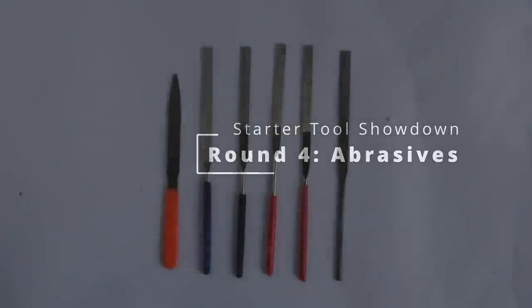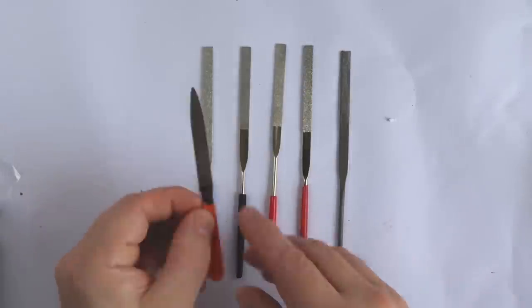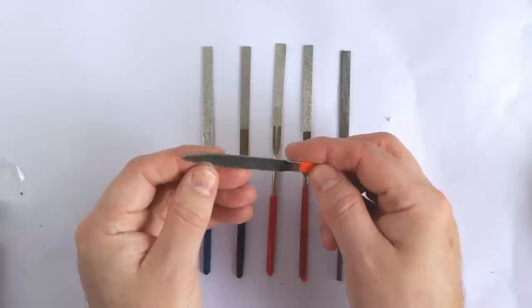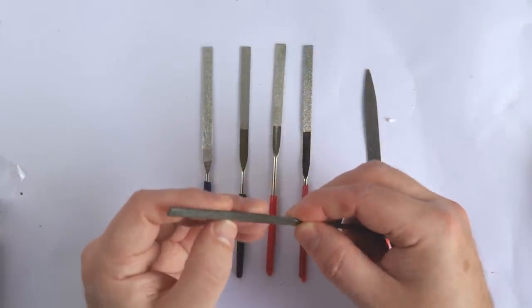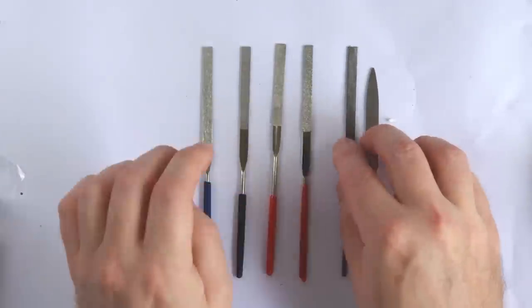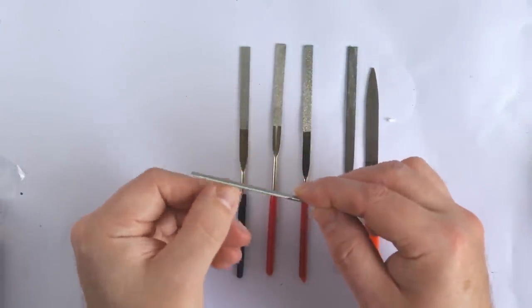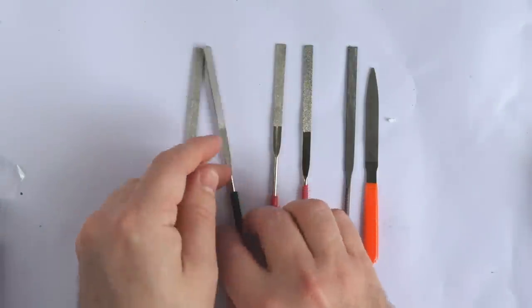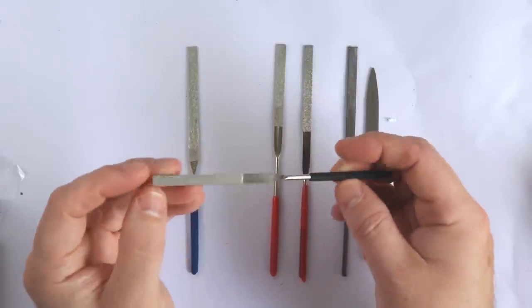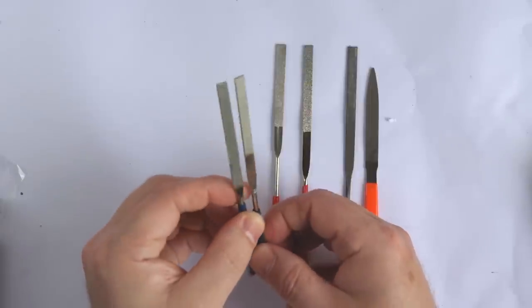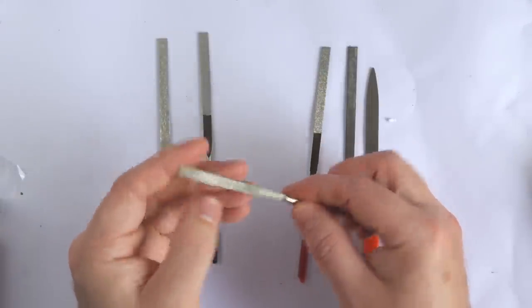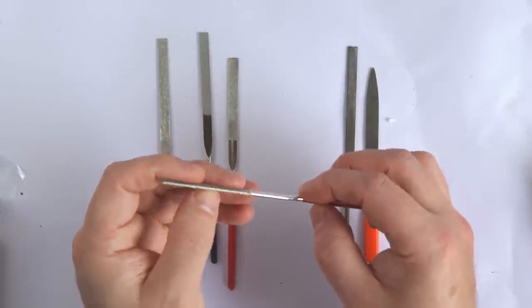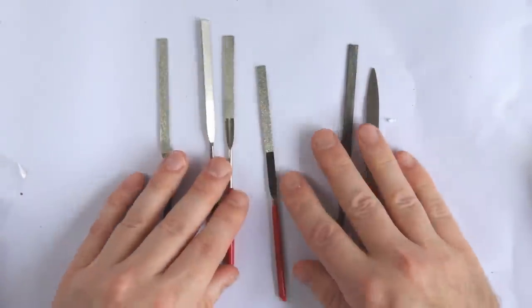On to round four, abrasives. Now all of the sets here, except Revell and my collection, feature files. Of these, most are diamond type files, with only Tamiya, Italeri and Modelcraft supplying purely metal files. I feel the cheaper Italeri and Modelcraft files are actually slightly better than the Tamiya file, since their size allows better access to small areas. I also think the metal files are better than the diamond ones at smoothing burrs on parts, as the latter are a bit too aggressive. There are some quality differences here, but not enough to really make too much difference.